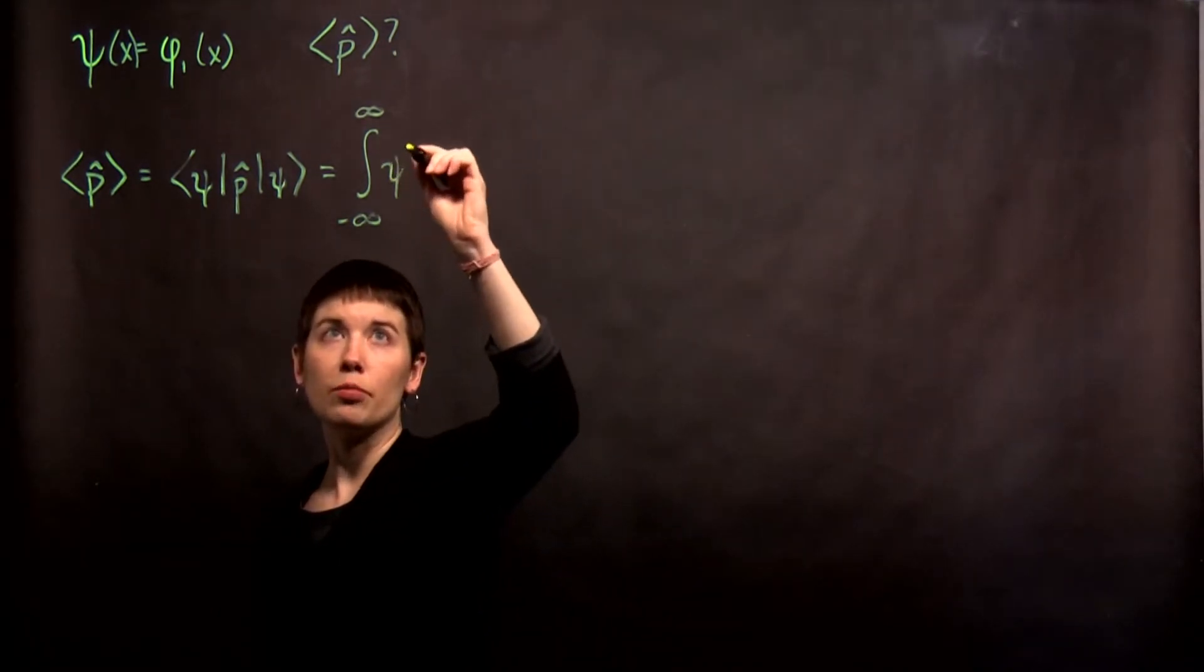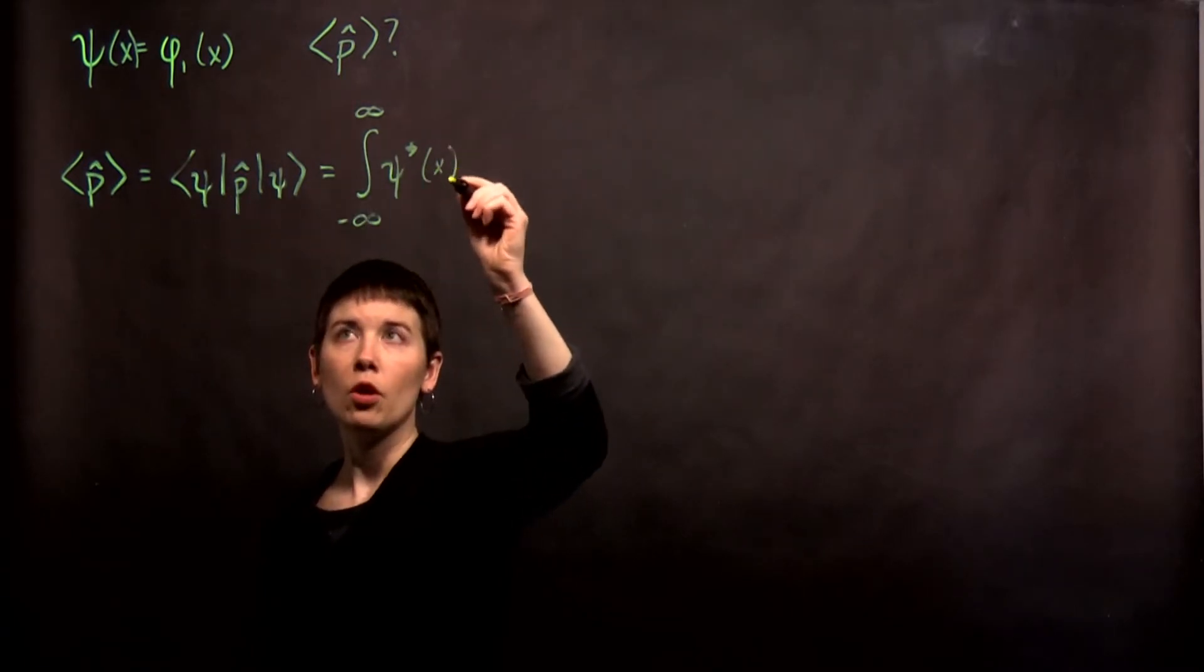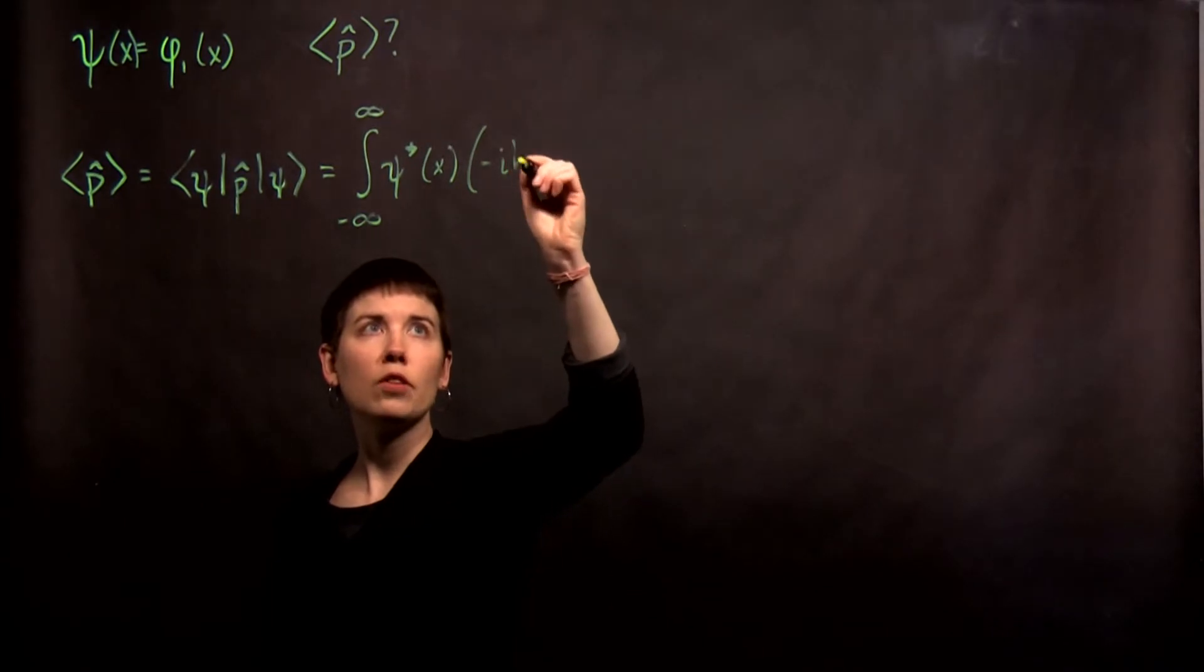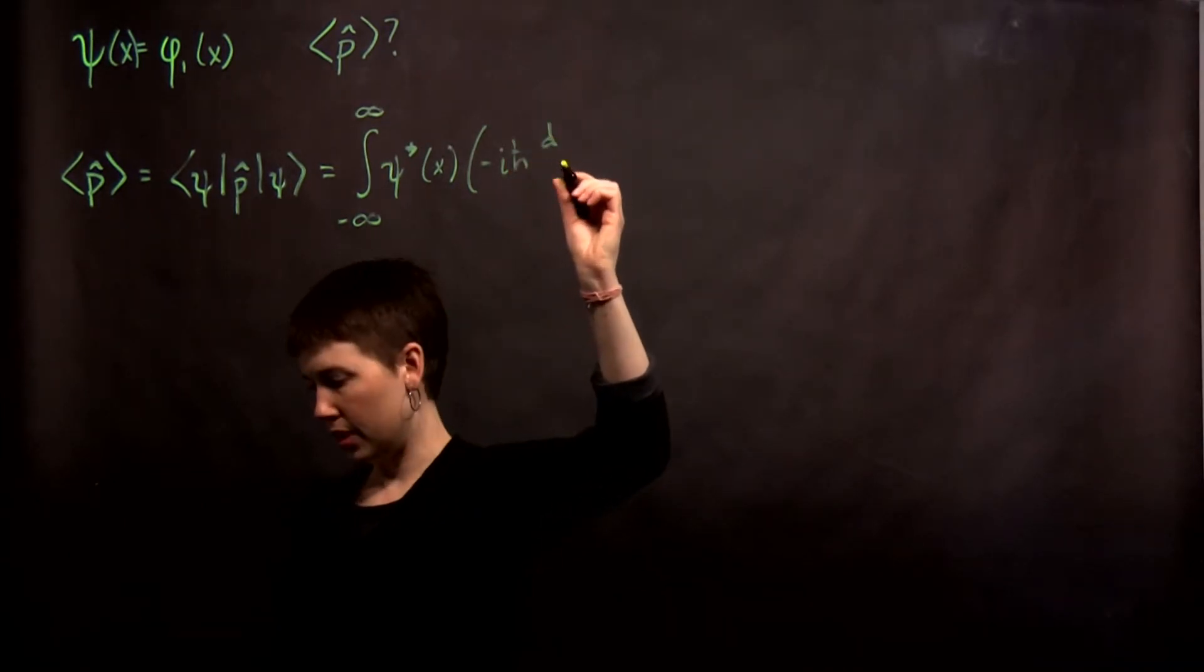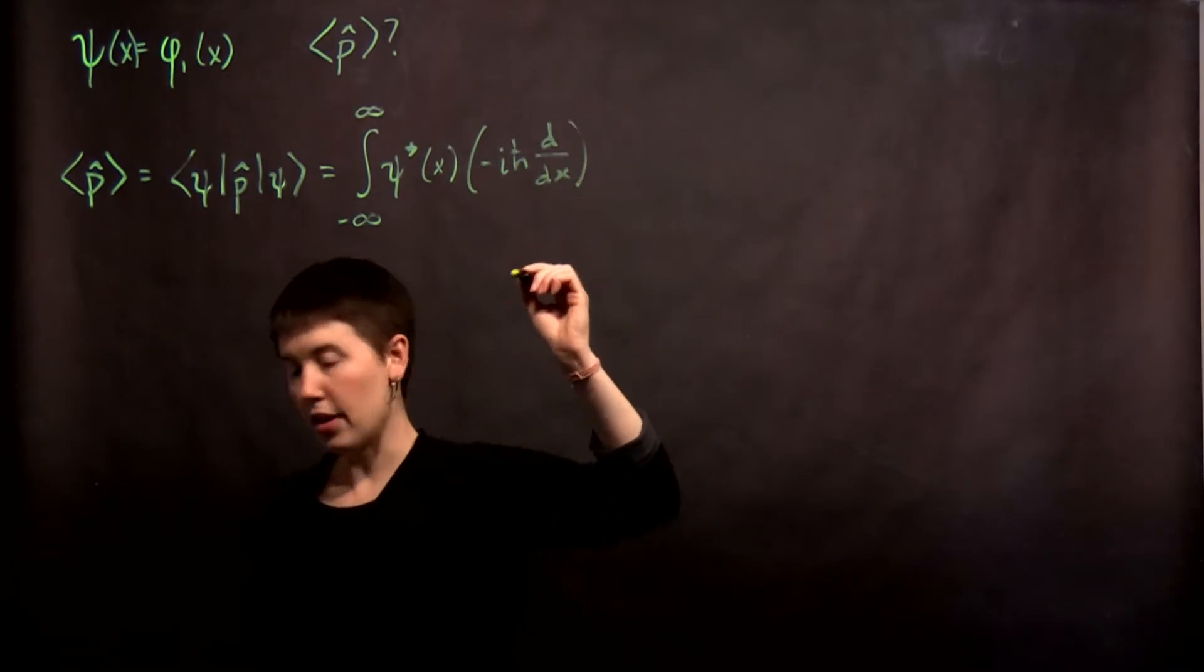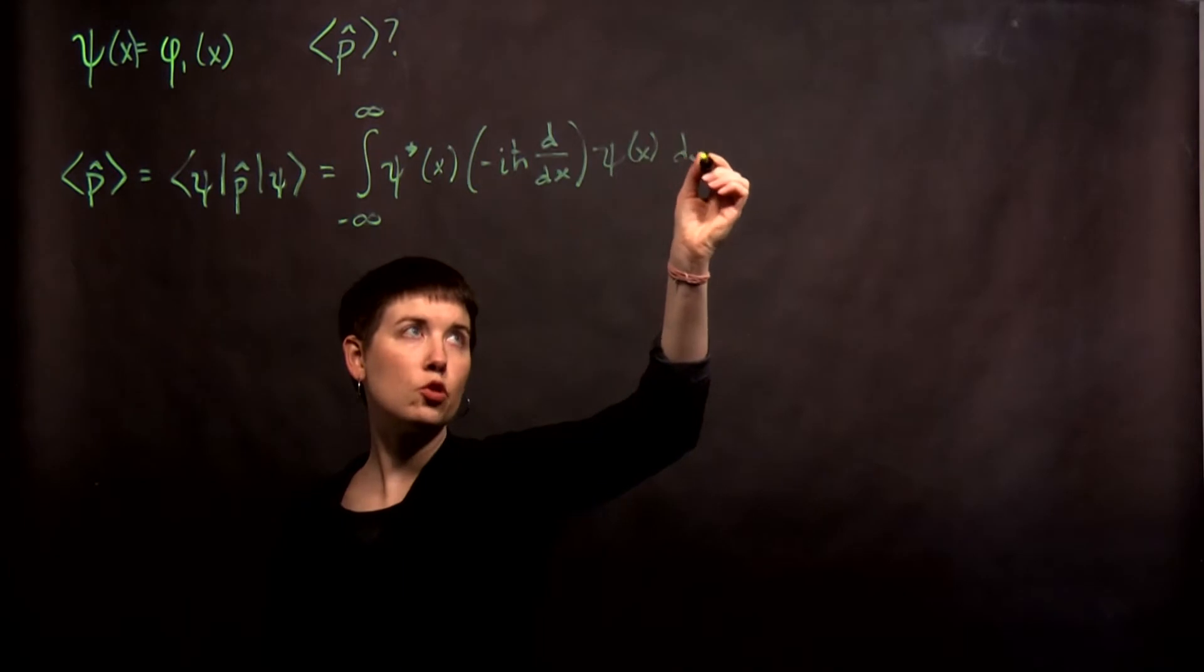We would have the complex conjugate of whatever state, the one that's appearing in the bra. We would then have our operator, and that momentum operator was negative i h-bar d dx. And then, again, my state. So this is the general starting point.